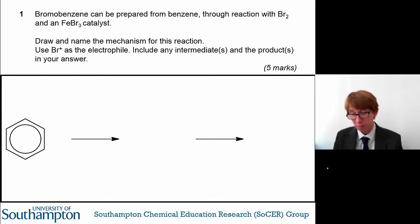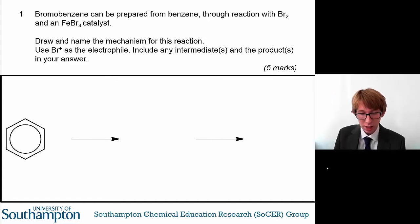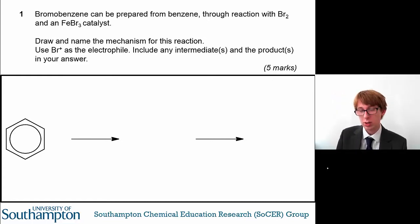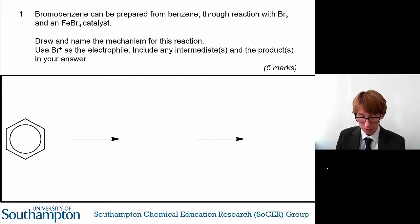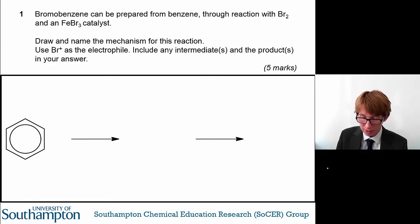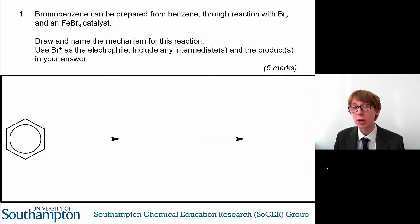Bromobenzene can be prepared from benzene through reaction with bromine and an iron bromide catalyst. What you need to do here is draw and name the mechanism for this reaction using Br+ as the electrophile, including any intermediates and products in your answer.